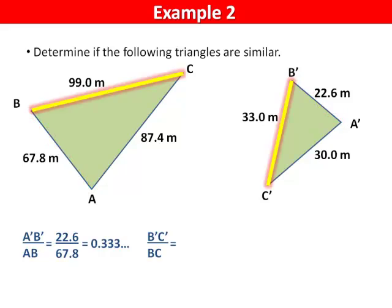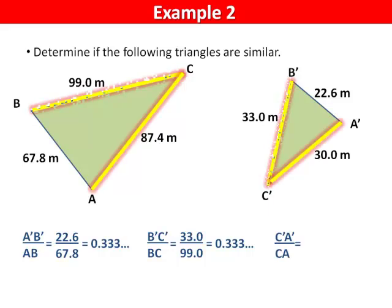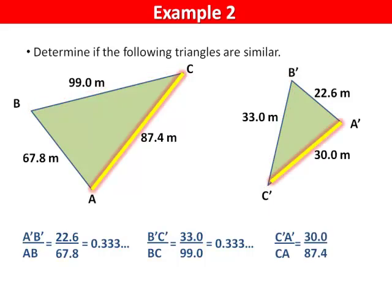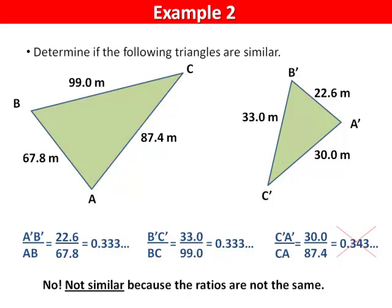B'C' over BC is 33.0 divided by 99.0, which is also 0.3 repeated. C'A' over CA is 30.0 divided by 87.4, which equals 0.343. Because this ratio is not the same, the triangles are not similar.